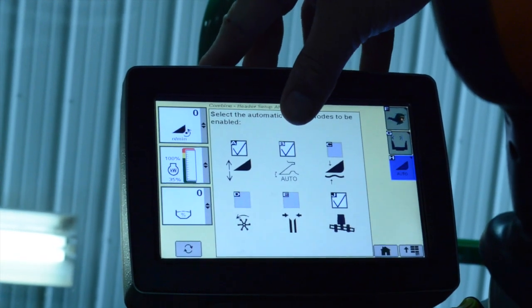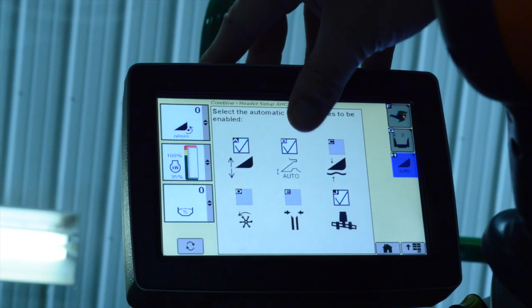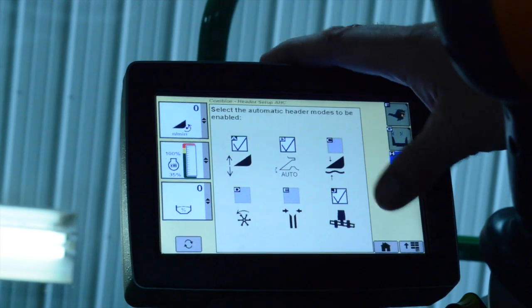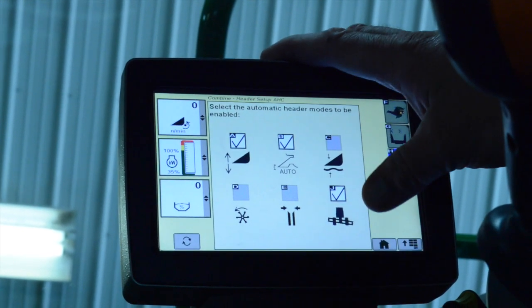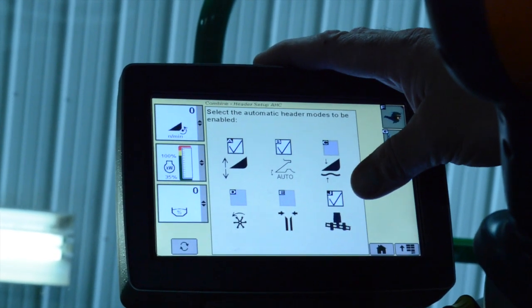B, which is going to be our feeder house position sensing, which is for going around the end, and J, which is for your contour master for turning it back on.